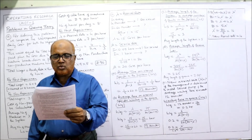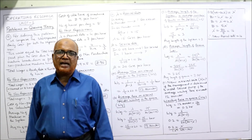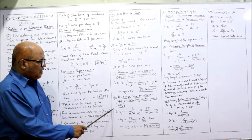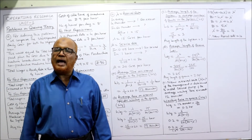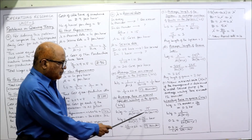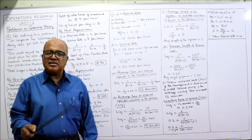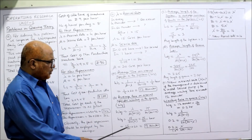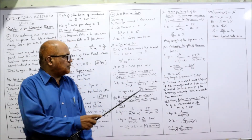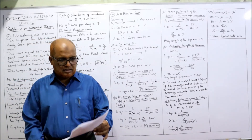Second question: average time an arrival spends waiting in the queue (Wq). The formula for Wq is lambda divided by mu times (mu minus lambda). So: 15 divided by 20 times 5, which gives 15 by 100 hours. Converting to minutes: 15 divided by 100 times 60 equals 9 minutes. A car spends 12 minutes in the whole system and 9 minutes waiting in the queue.